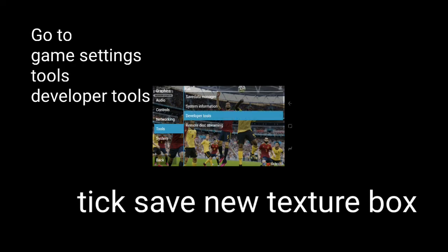Go to Edit, then open a real player. Press back on your phone and go to Tools, then Developer Tools. Scroll down and tick the 'Save New Texture' box.